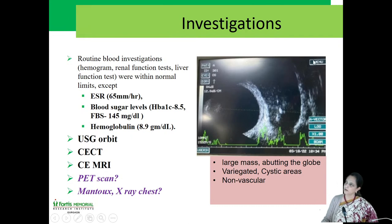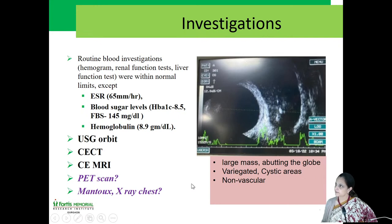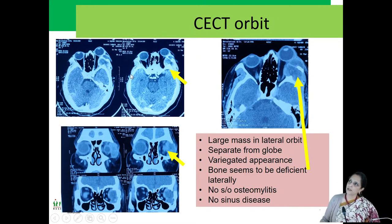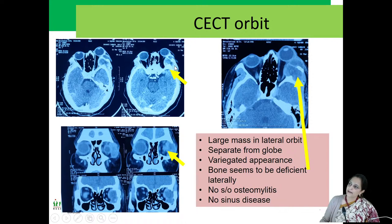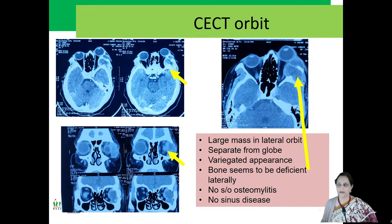The ultrasound showed a large mass with variable reflectivity. On CT orbit, there is a large mass in the lateral part of the orbit, well seen on coronal sections, appearing separate from the globe with a variegated appearance. There seems to be some deficient bone laterally with no signs of osteomyelitis or sinus disease. Dr. Sharma will provide a more detailed description of the radiology.